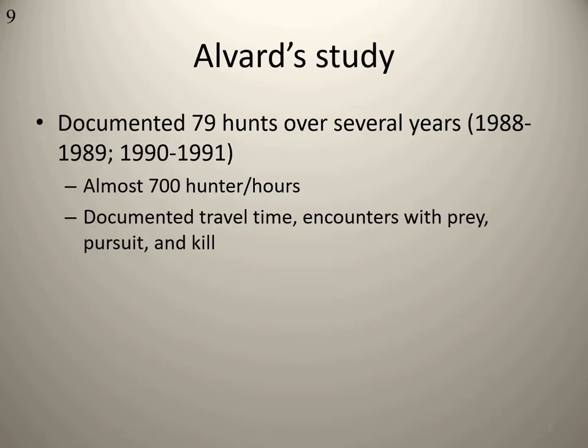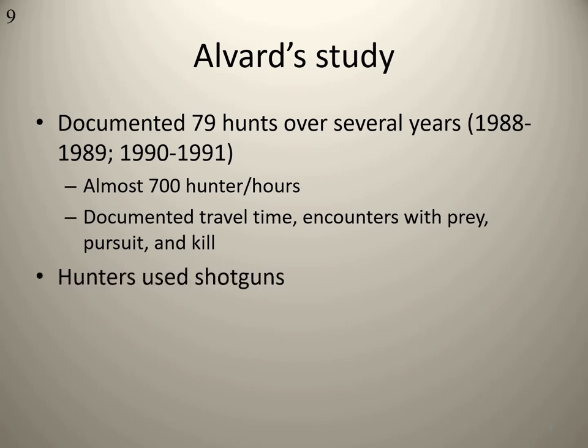Alvard documented over 79 different hunts over several years from 1988 to 1989, and also documented hunts from 1990 to 1991. The end result was almost 700 hunting hours documented. He documented travel time, encounters with prey — where, what, who, how — whether in the jungle or by the river, what type of prey, the pursuit, and the kill. Hunters were using shotguns at this time; new technology had been introduced. Traditionally the Piro would have used bow and arrow or blowguns — blowguns where you blow poison darts up through the trees to hunt spider monkeys and other prey.